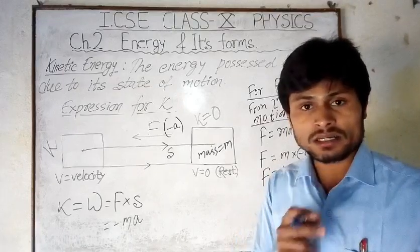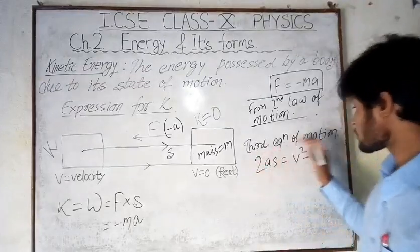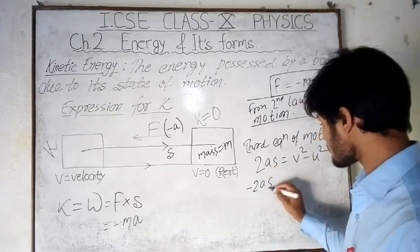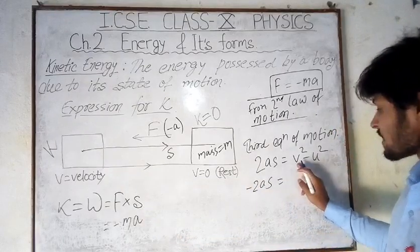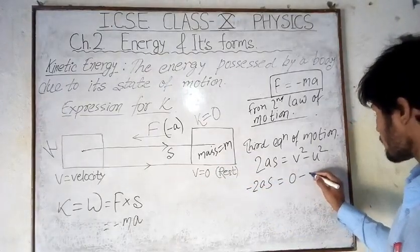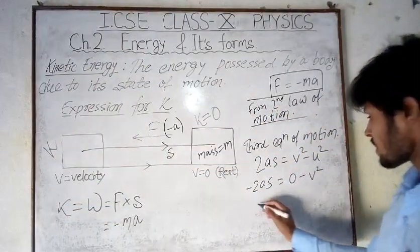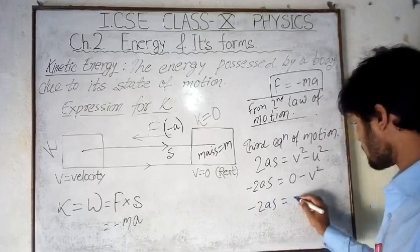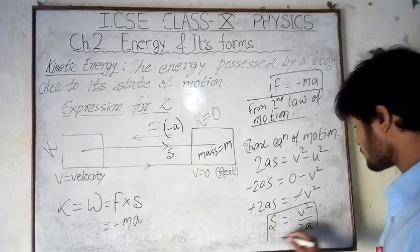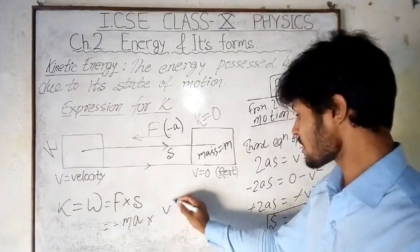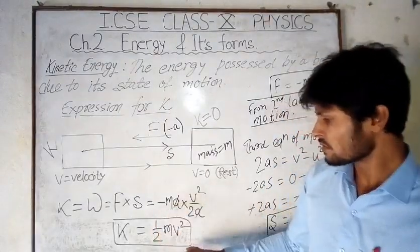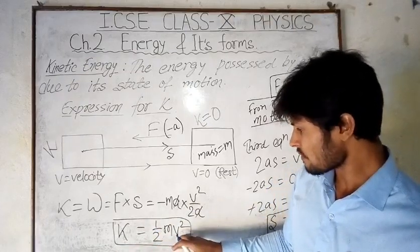Now we find the value of displacement s using the third equation of motion: v² = u² - 2as. Since acceleration is negative, this becomes 2as = u² - v². The final velocity is zero, and the initial velocity is v, so we get: 2as = v², and therefore s = v²/2a. Now we can substitute these values.